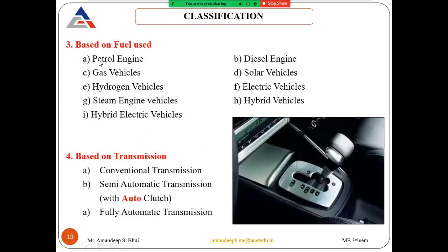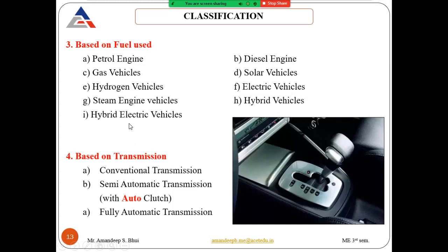Based on fuel used, automobiles can be classified as petrol engine, diesel engine, gas engine, solar powered, hydrogen powered, electric, steam engine, or hybrid vehicles. Hybrid vehicles use one or more fuel types in combination — for example, CNG vehicles use both petrol and CNG, allowing the driver to switch between fuel types. Hybrid electric vehicles combine options such as petrol-electric, gas-electric, diesel-electric, or solar-electric.